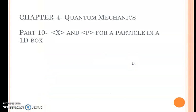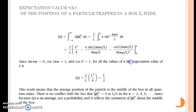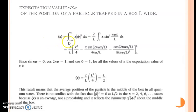Today we will find the expectation value of position and the expectation value of momentum for a particle trapped in a one dimensional box having width L. We know that the expression for the expectation value of position is given by ⟨x⟩ equal to the integral from minus infinity to plus infinity of x times |ψ|² dx. Since the operator x is x itself, we can find this value by substituting the wave function for a particle trapped in a one dimensional box.